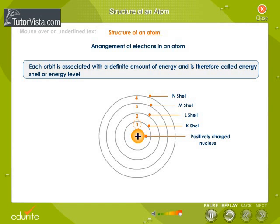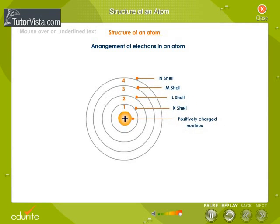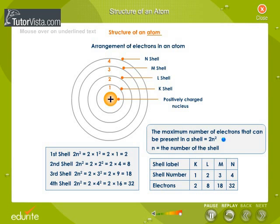as 1, 2, 3, 4, and so on, or named as K, L, M, N, and so on. The maximum number of electrons that can be present in a shell is given by the 2N² rule, where N is the number of the shell.